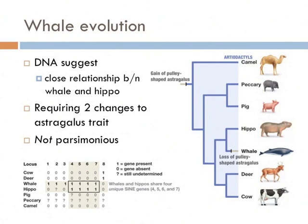Not so fast, says Dr. Fancy DNA Scientist Guy. In his study of genes, he found that whales share more genes with hippos than any of these other species, so therefore hippos must be closely related to whales. 'How can this be?' exclaims Dr. Old School Cladistic Scientist Guy. 'They don't even have an astralagus!' Well, Dr. Fancy DNA Scientist explains: the evolution of the whale required two changes in the astralagus trait. Its ancestor gained a trait that was passed on to all these other tasty creatures, but it had to have been lost when the ancestor of the hippo and the whale diverged. In other words, it is not parsimonious.